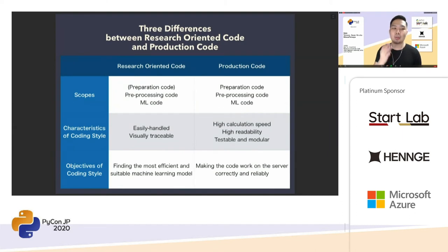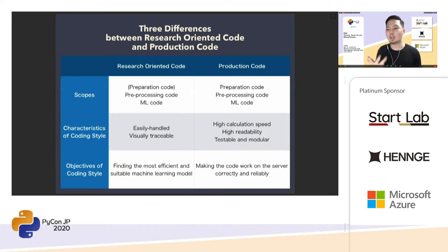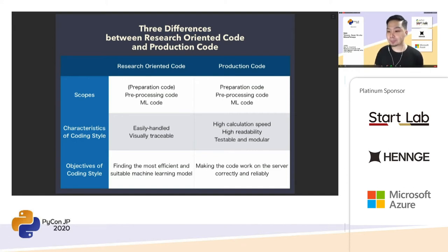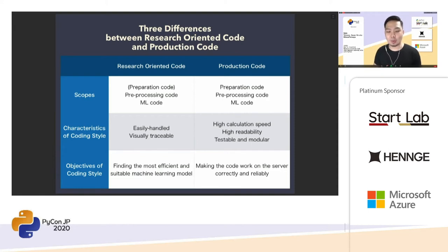I identify three differences between research-oriented code and production code: different scopes, different characteristics of coding style, and different objectives. Researchers focus more on writing pre-processing code and ML code. Engineers have responsibility to write the whole part of the code at production level. Research-oriented code seems to be easily handled and visually traceable. On the other hand, production code needs to be concerned about high calculation speed, high readability, and should be testable and modular.